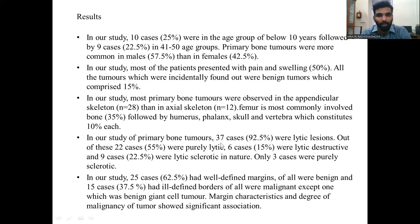In our study of primary bone tumors, 37 cases were lytic lesions. Of these, 22 cases were purely lytic, 6 cases were lytic with sclerotic margins, and 9 cases were mixed lytic-sclerotic in nature. Only 3 cases were purely sclerotic. Twenty-five cases had well-defined margins and all were benign, while 15 cases had ill-defined borders and all were malignant except one, which was a benign giant cell tumor. Margin characteristics and degree of malignancy showed significant association.